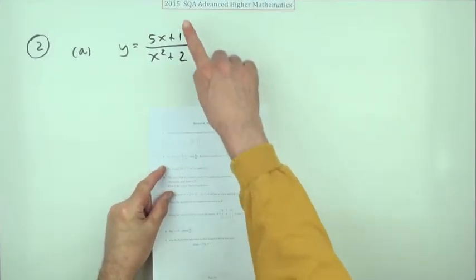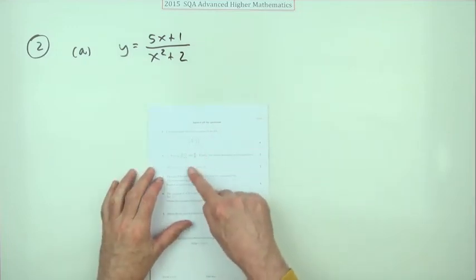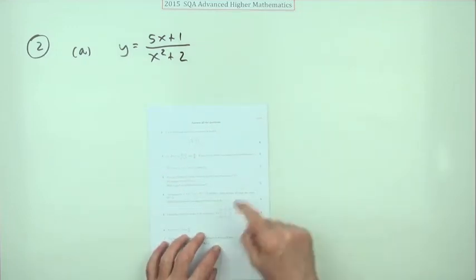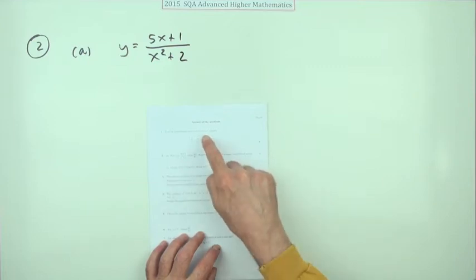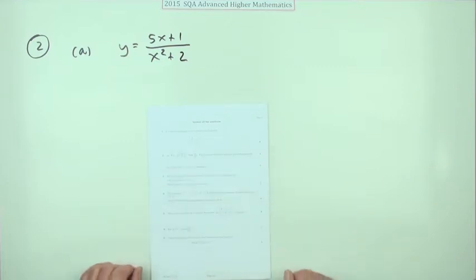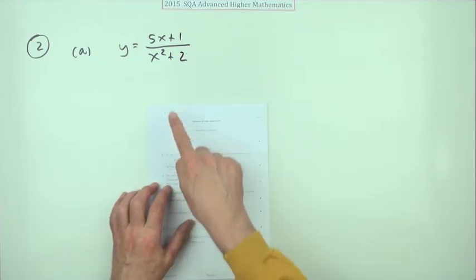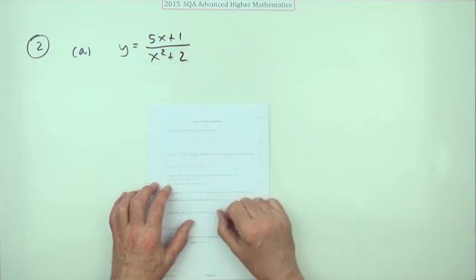So question 2 then from the 2015 Advanced Higher Maths, the differentiation question, six marks, easier six marks than the four marks for question one. First one you've got this rational expression for y and you have to differentiate it and give your answer as a single simplified fraction.